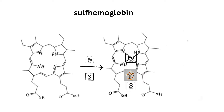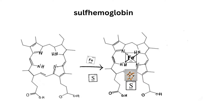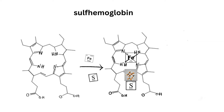Sometimes sulfa drugs and nitrites in food preservatives — dried fruit and meats — will cause an irreversible oxidation with the addition of a sulfur atom to the protoporphyrin ring of heme, preventing oxygen from binding. This is sulfhemoglobin. Note that no automated methods are available for detecting sulfhemoglobin.